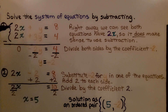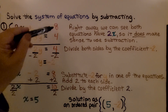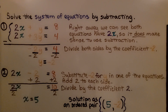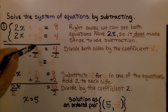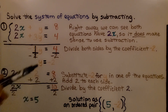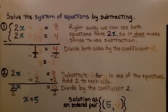We subtract: 2x minus 2x gives zero, so that's eliminated. Then y minus 3y gives negative 2y, and 8 minus 4 is 4. We divide both sides by the coefficient negative 2. Negative 2 over negative 2 is 1y, and 4 divided by negative 2 gives us negative 2. So y equals negative 2.